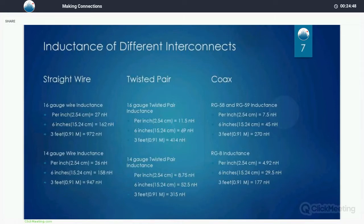Middle column. How about twisted pair? Used for telephones and many other devices. Well, it's better. Per inch the inductance is 11.5 nanohenries for 16 gauge, 8.75 nanohenries for 14 gauge. Big improvement over just plain straight wire. How about coax cable? Everybody loves coax cable. It's used because it's shielded so it must be good for driving laser diodes, right? Well, it's better. 7.5 nanohenries per inch for RG58 which is small diameter coax. 4.9 nanohenries per inch of RG8. Slightly larger coax.